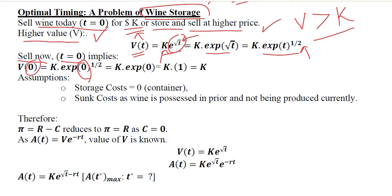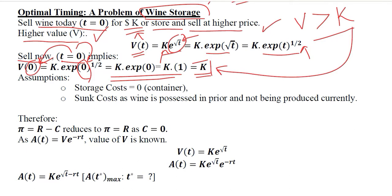On both sides t exists, so we put zero in place of t. Once we do this, the solution leads us to k. The final answer is k, which means it is correct to assume that the current value of wine is k when no time has passed, that is t equals zero. So this formula is now verified and suitable for use.